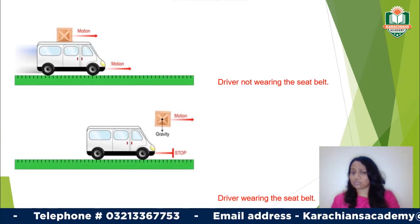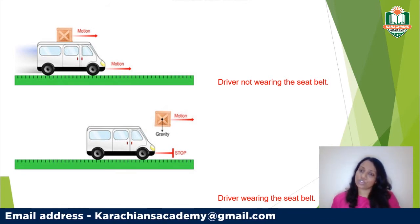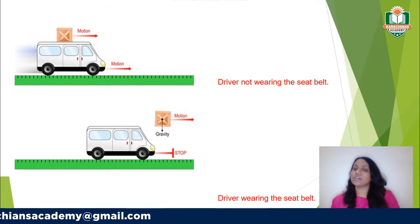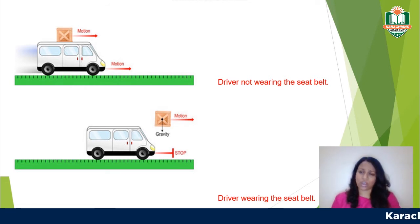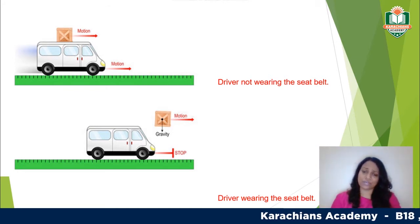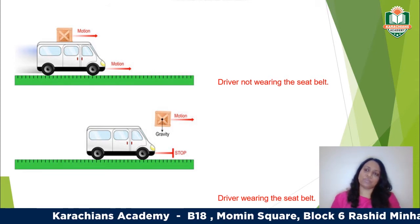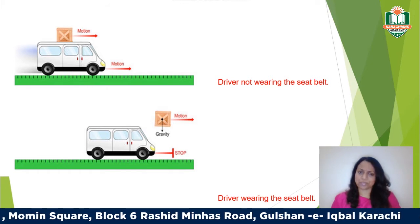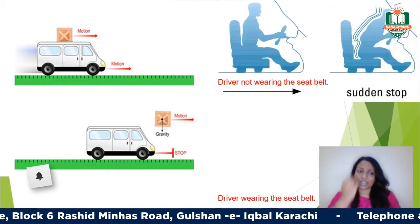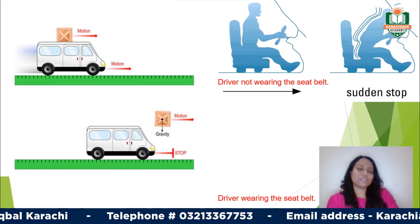Another example: there's a box on top of a van. When the van is moving, the box moves with it. But if the van stops suddenly, the box will move forward and topple over. This is because of inertia — since the box is moving, it wants to continue moving. It then moves downwards because of the pull of gravity.